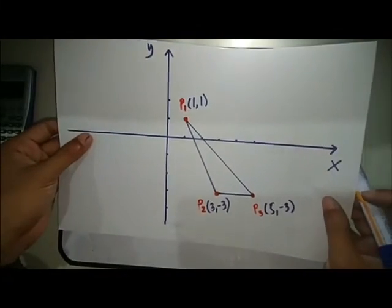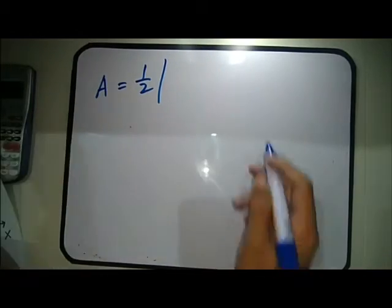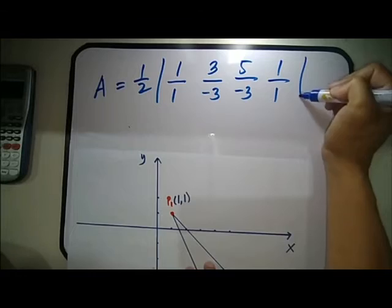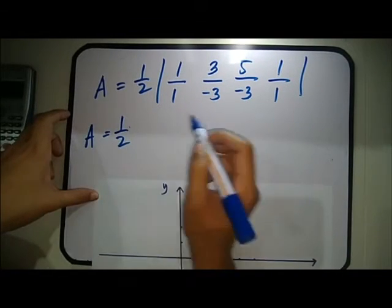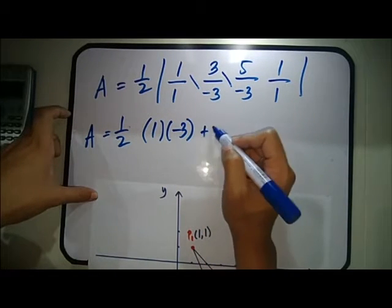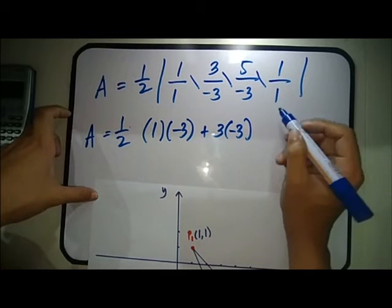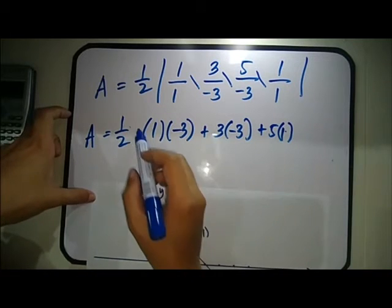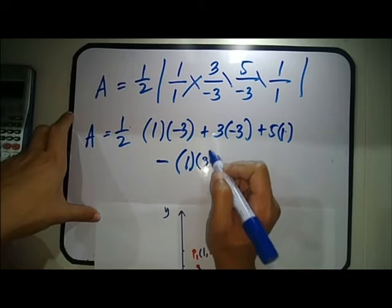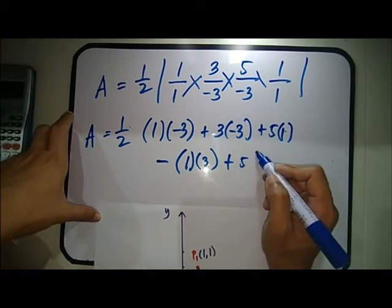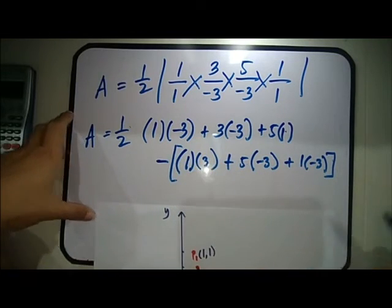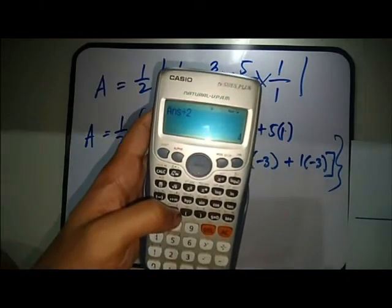Applying the formula: A equals one-half times |(1 times -3) + (3 times -3) + (5 times 1) minus (1 times 3 + 5 times -3 + 1 times -3)|. Computing the cross products and subtracting, and remembering to include parentheses, gives an area of 4 square units.